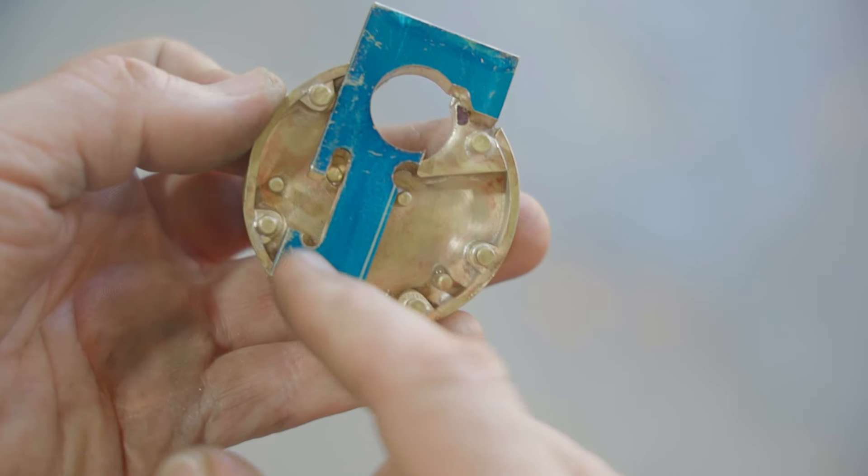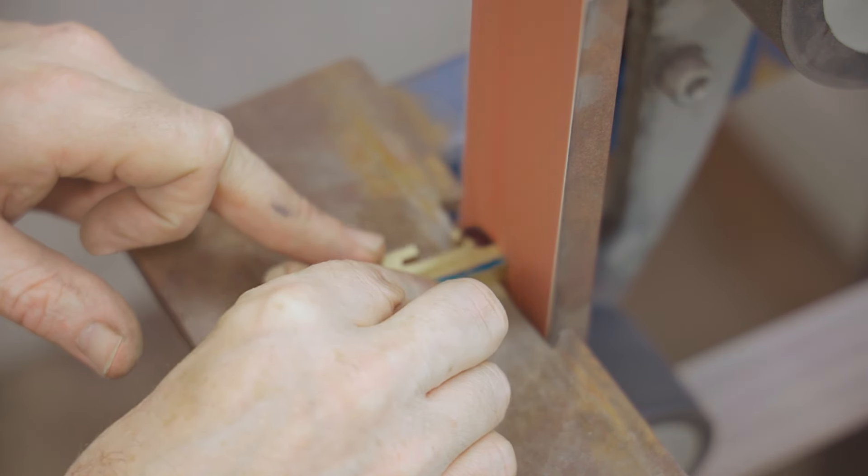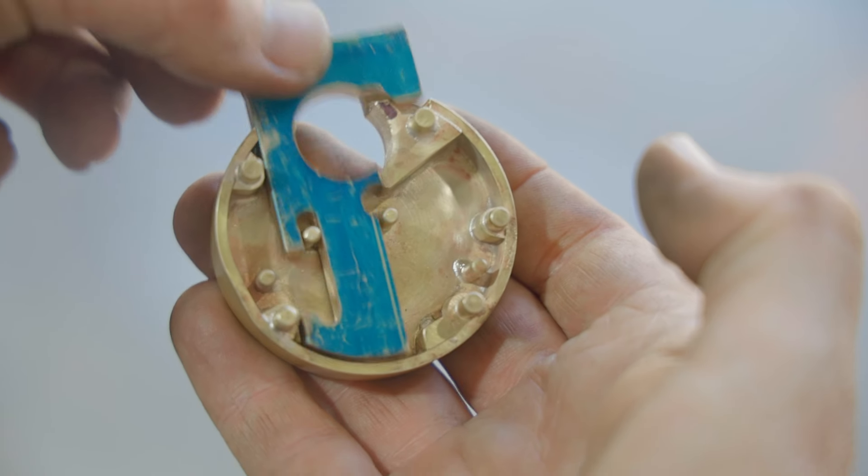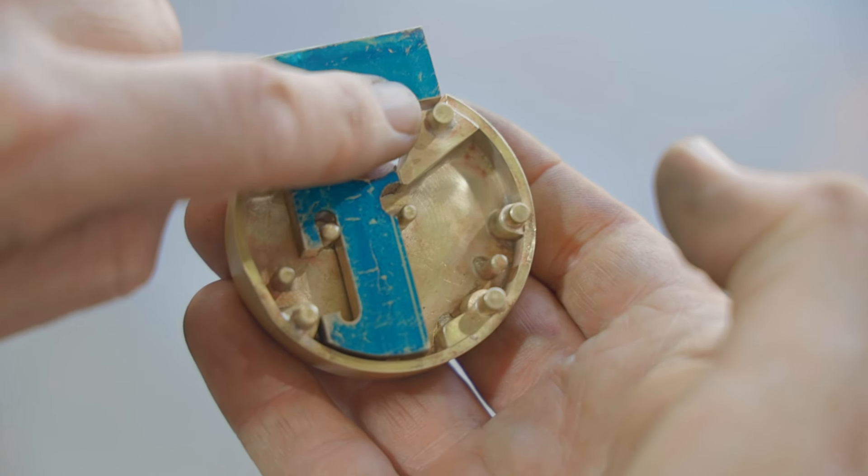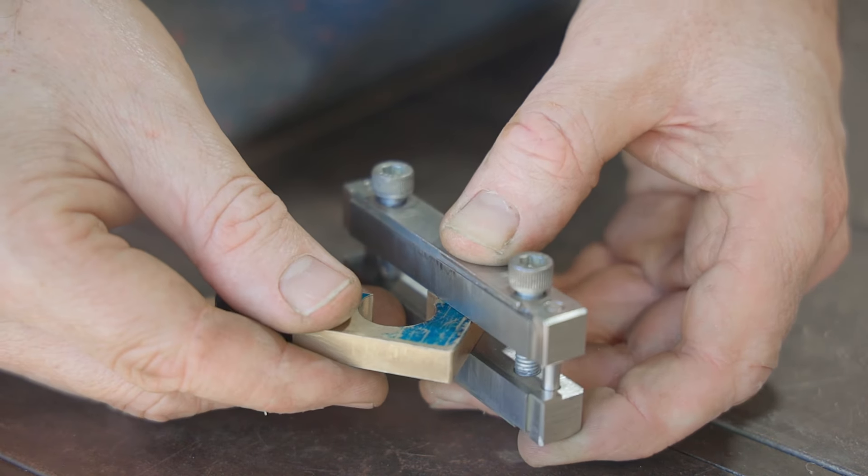Next I'll take some off the bottom and that will only take a few seconds on the belt grinder. For the next section I'll use a file guide and that's an awesome tool for filing accurately.